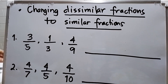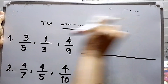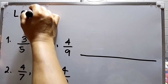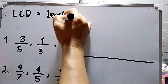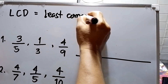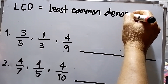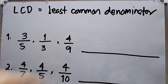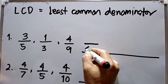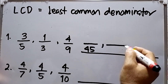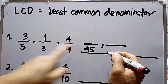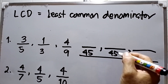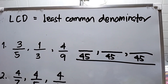LCD is Least Common Denominator. The LCD between five, three, and nine is 45. So this one will be the first fraction, the second fraction, and the last fraction which is four over nine. So LCD is 45.